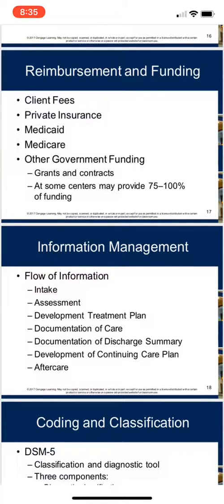Then we have other government funding sources. Several federal agencies administer a variety of block grants and contracts to support substance abuse treatment or prevention. The agency that administers the Federal Substance Abuse Prevention and Treatment (SAPT) grants is the Substance Abuse and Mental Health Services Administration, known as SAMHSA. These grants and others usually are awarded to individual states, which in turn distribute the money to eligible community agencies. In some of these agencies, federal funding may account for up to 75% or more of total revenue.